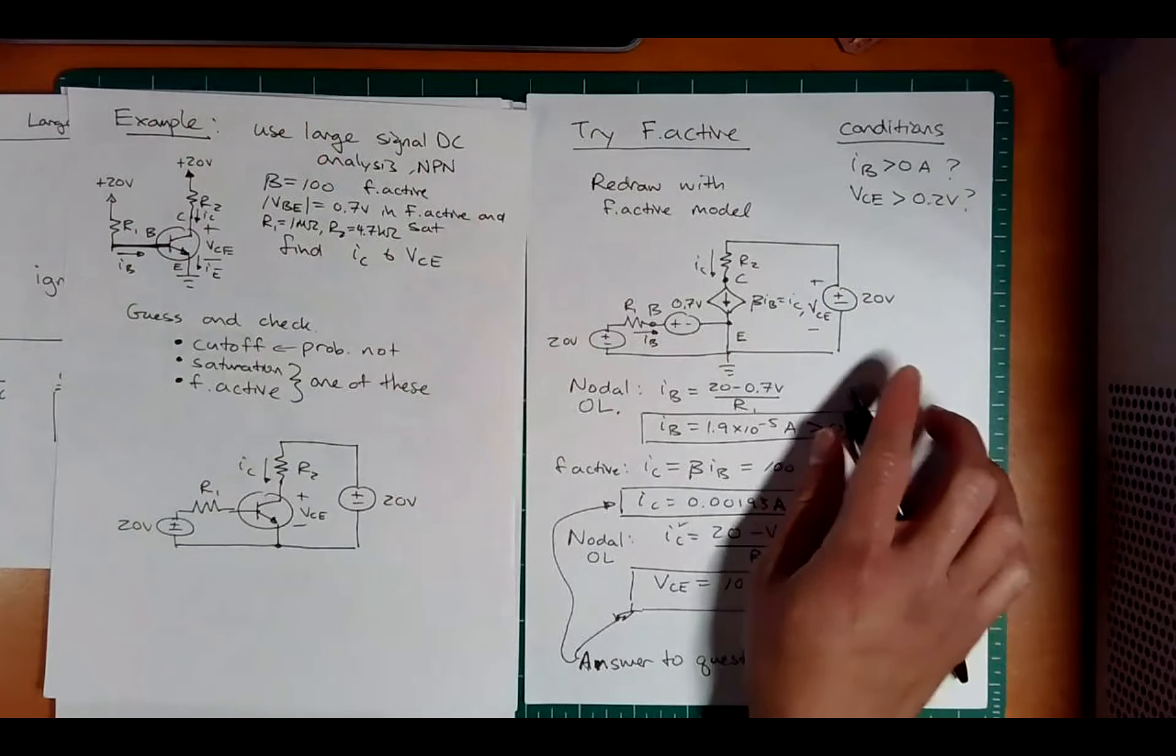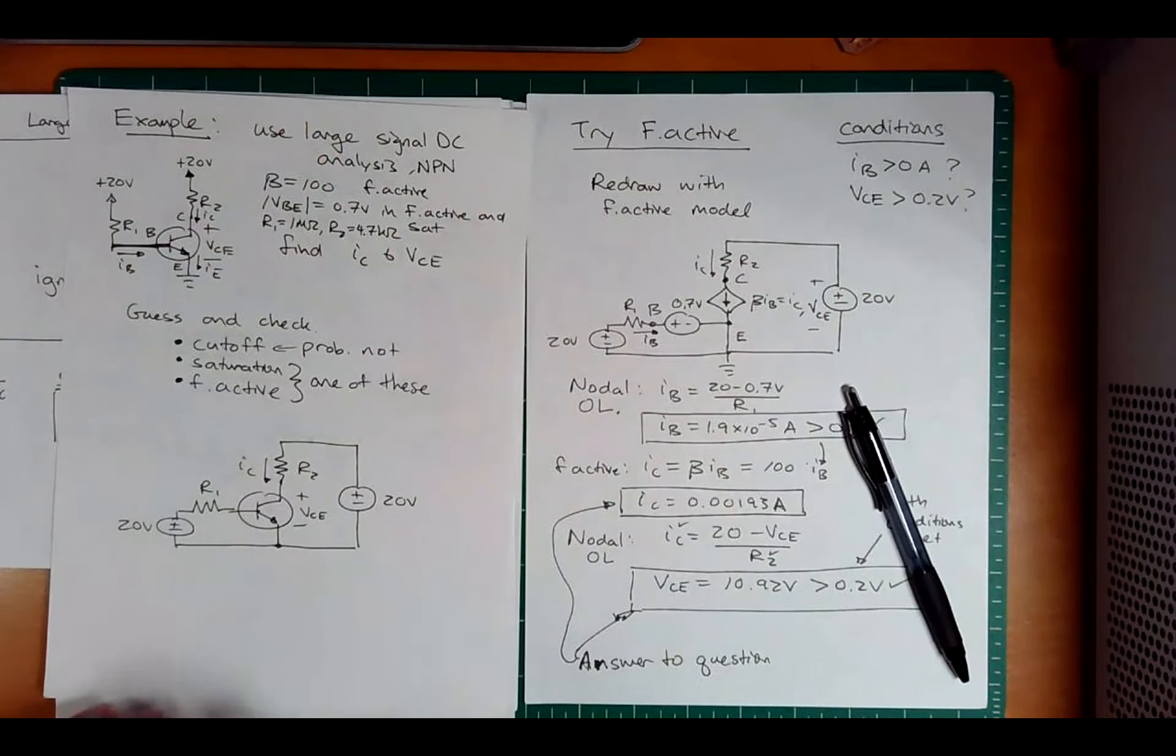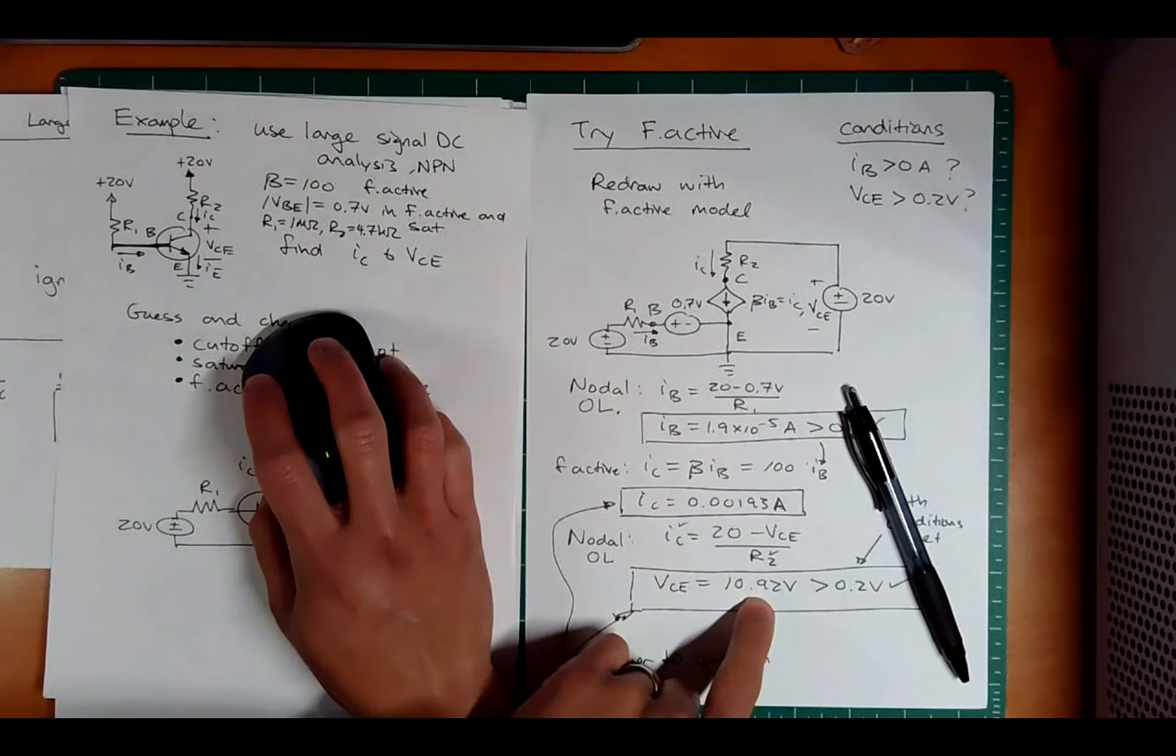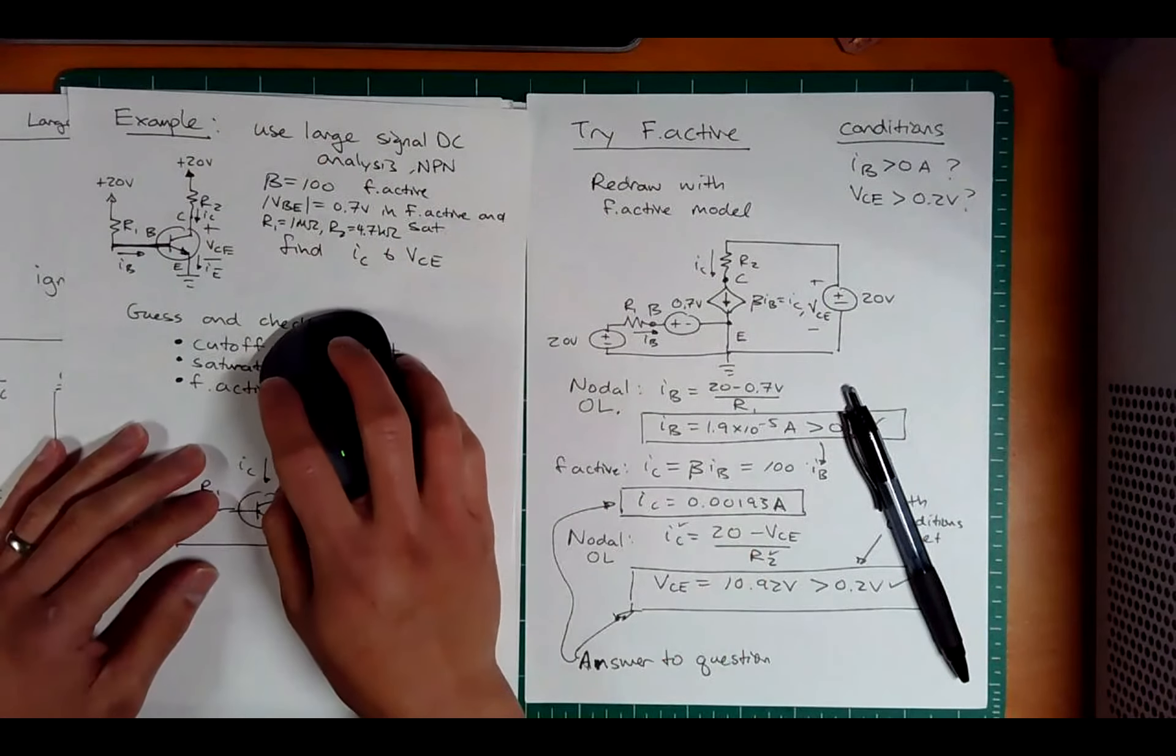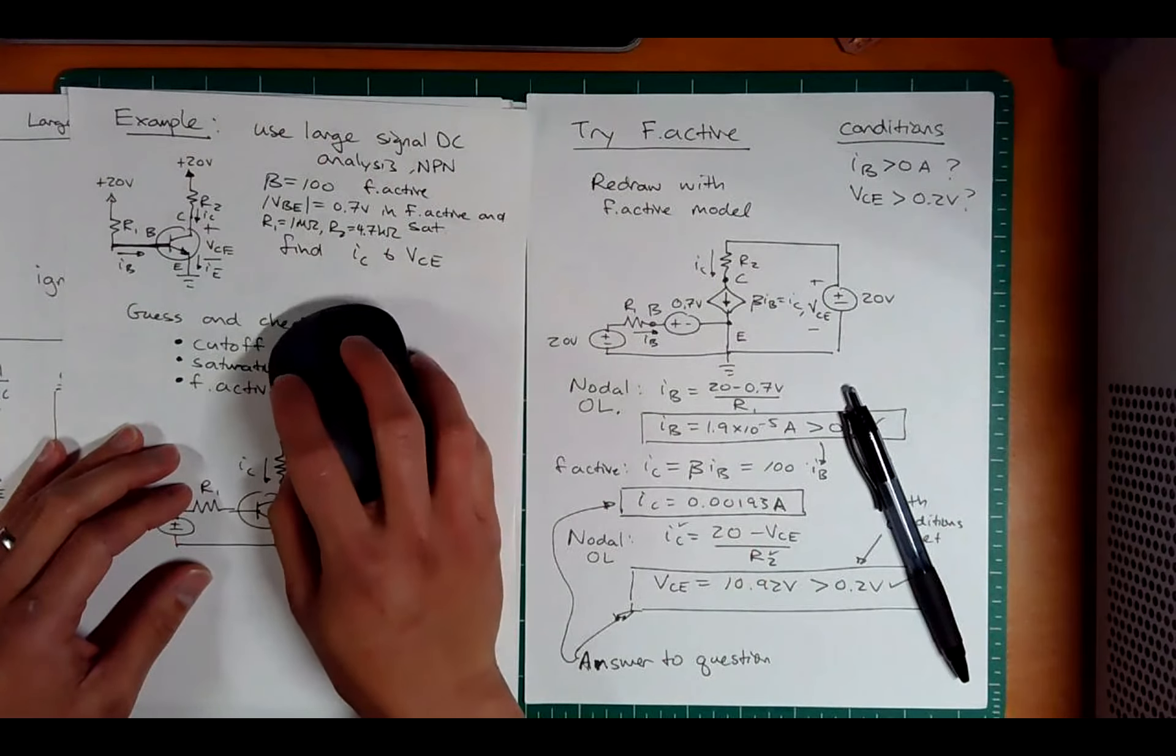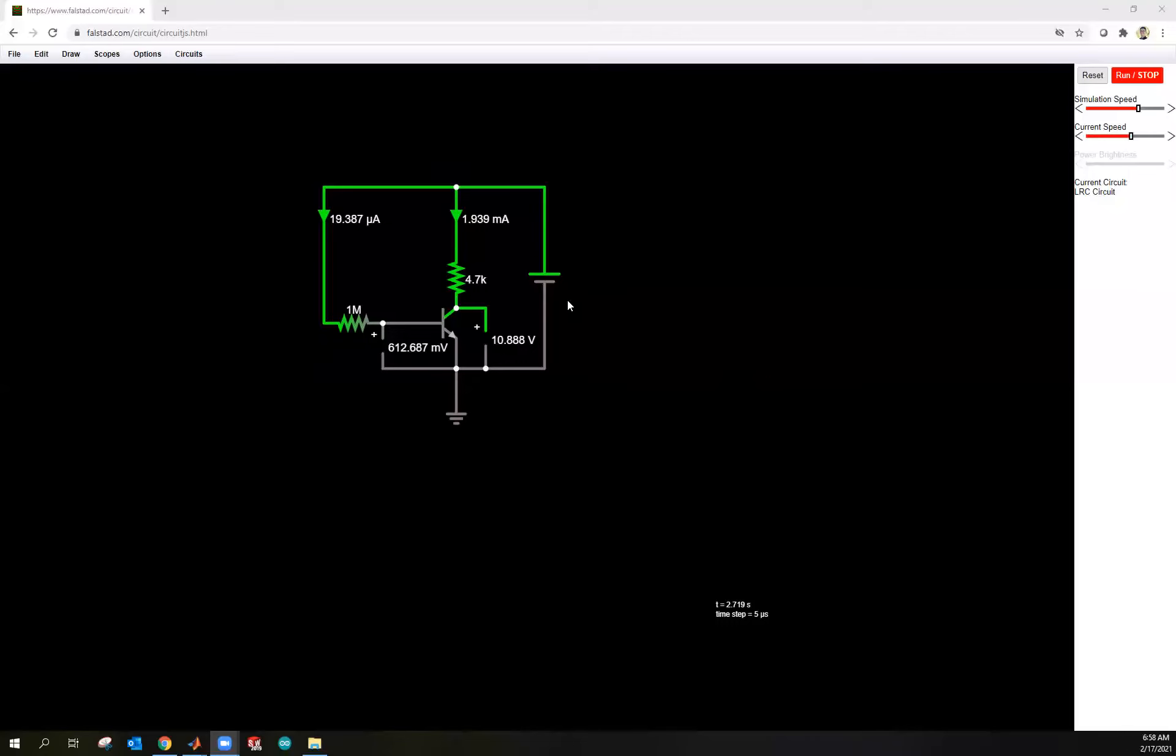The last thing I did was actually put this into the CircuitSim and just see if this is matching. So 10.92, 0.00193. So let's just go switch over. So I'll go over and switch. And if you look here, I actually put in the values. I have my NPN transistor. I have VCE. I have R1 and R2. And if I run this, notice the values.